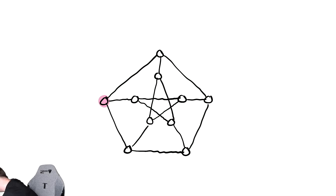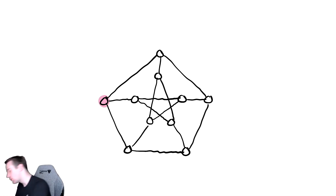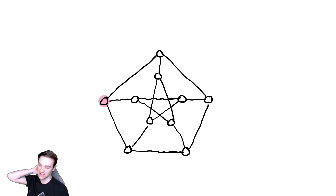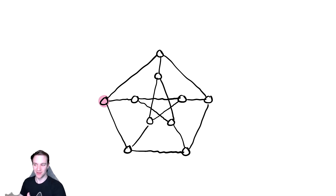Maybe we can try to think about this differently — reverse engineer a way to get to the spot we want. We want to start here, and we need to end at one of those other three vertices. We need to try to find a way to work backwards. I'll let you try this for a little while. Don't try for too long, because it's impossible — but try for a little while.